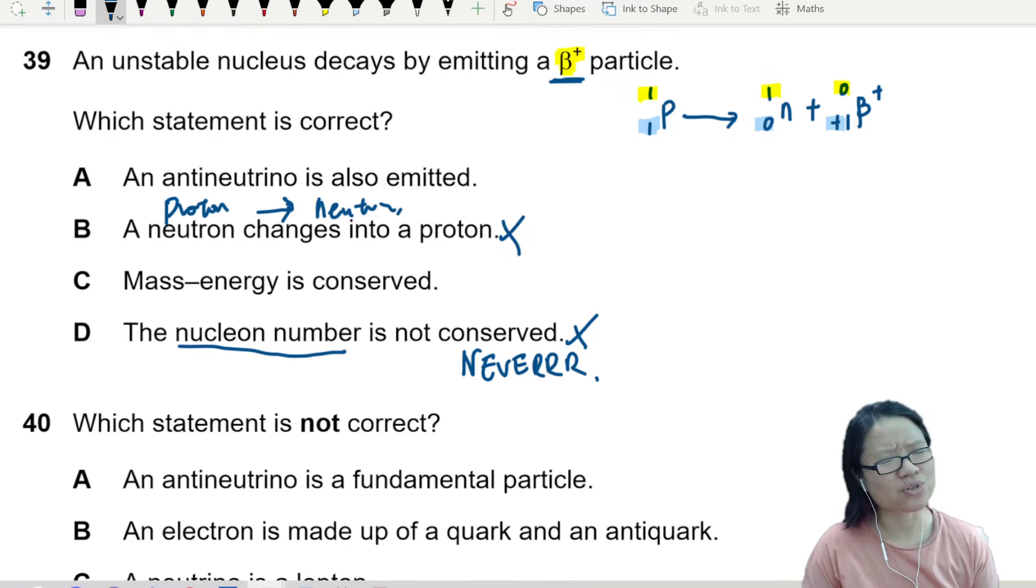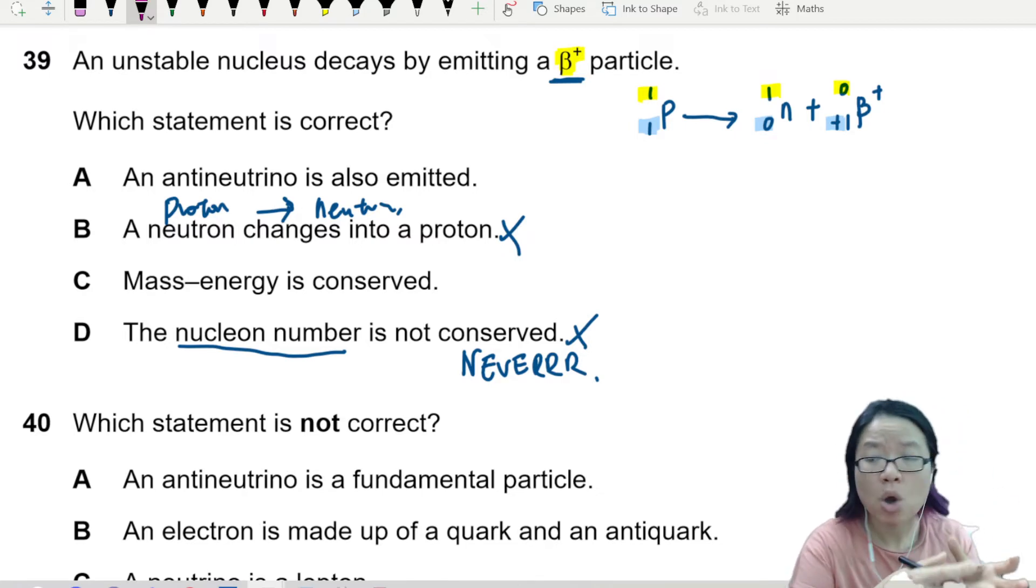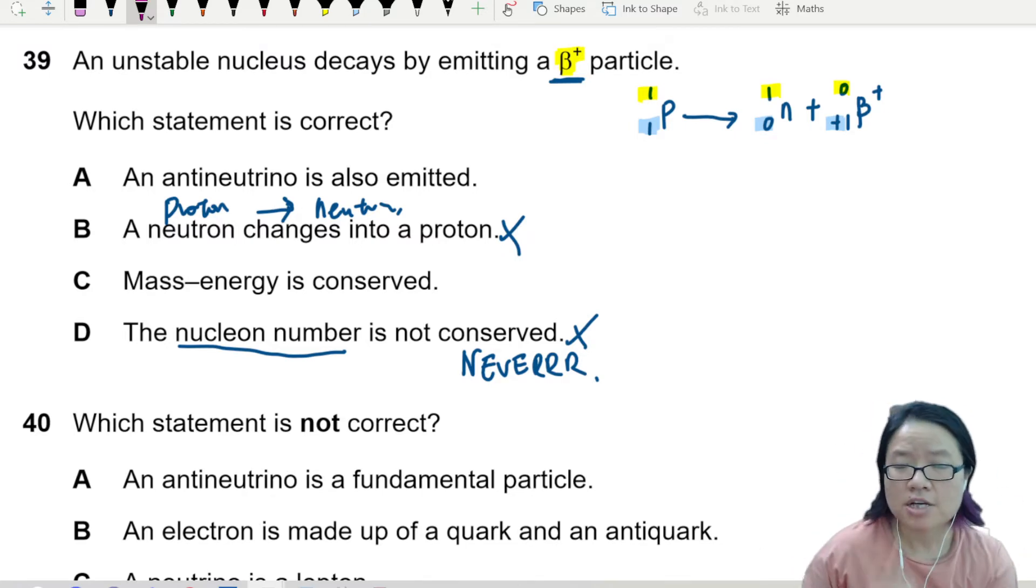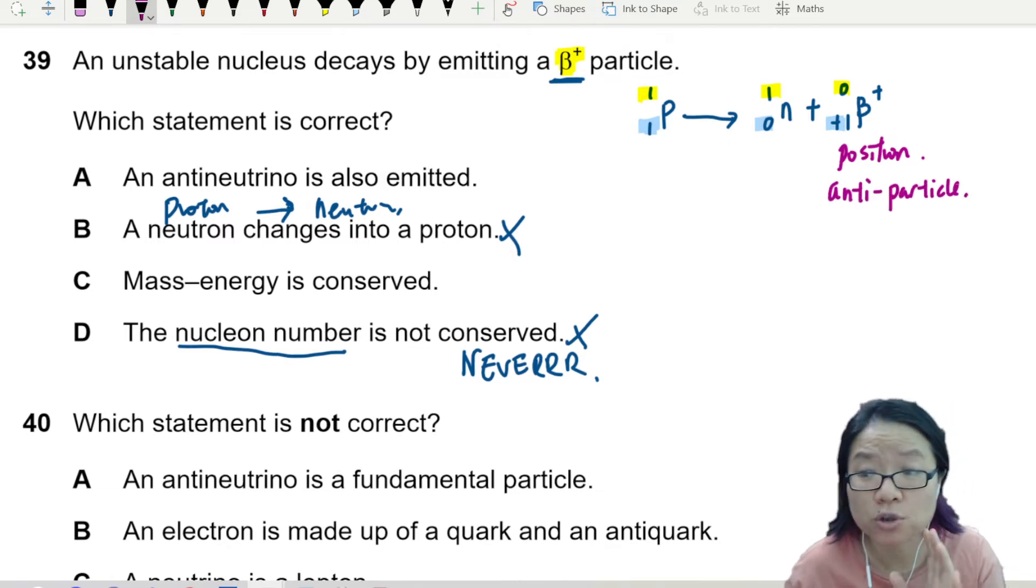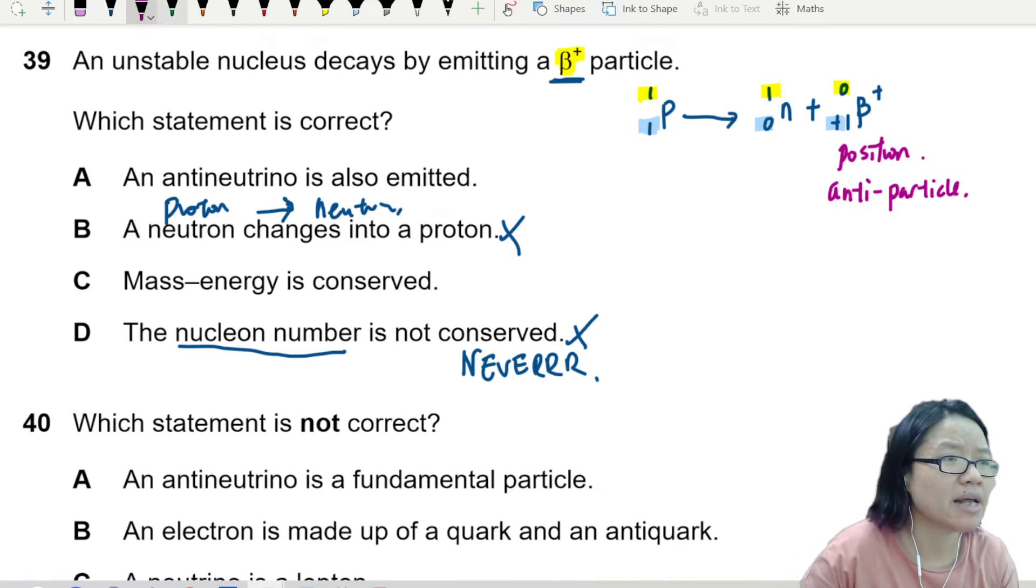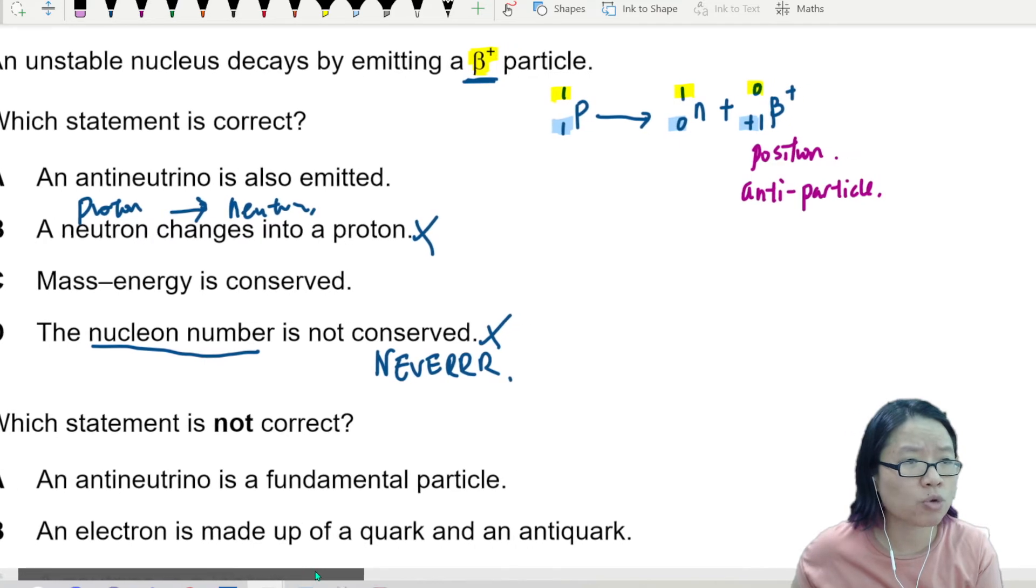An anti-neutrino is also emitted. How do we think about this? Remember the pairing. We always must pair a particle with an anti-particle. So this beta plus is actually known as positron. Very weird name - positively charged electron, positron. This is obviously an anti-particle, the evil twin of the electron.